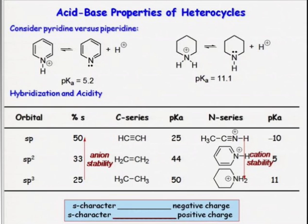So if we go back and look at those two structures again, pyridine has an SP2 hybrid nitrogen, and piperidine has an SP3. Using the rules in the table, we see that the SP3 hybridized nitrogen should be a more stable cation than the SP2 hybridized nitrogen. Thus, if it's a more stable cation, it's a less reactive species. Therefore, we can see why the pyridine conjugate acid is a much stronger acid and more reactive.